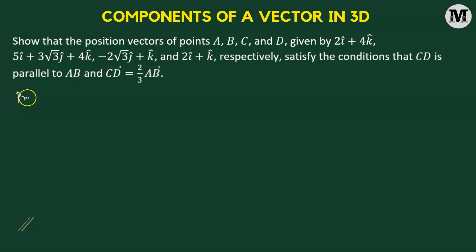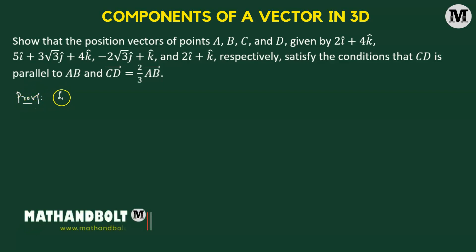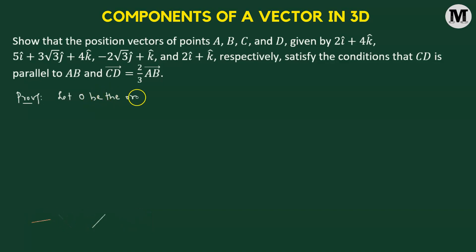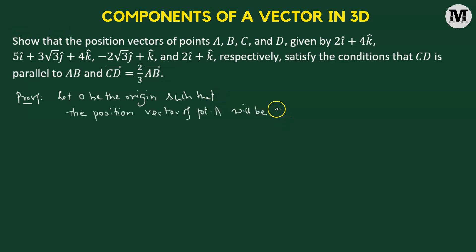Okay, let us begin. We will consider O to be the origin, so that we can define the position vector of the given four points. The position vector of point A is defined by OA vector with value given by 2i cap plus 4k cap.